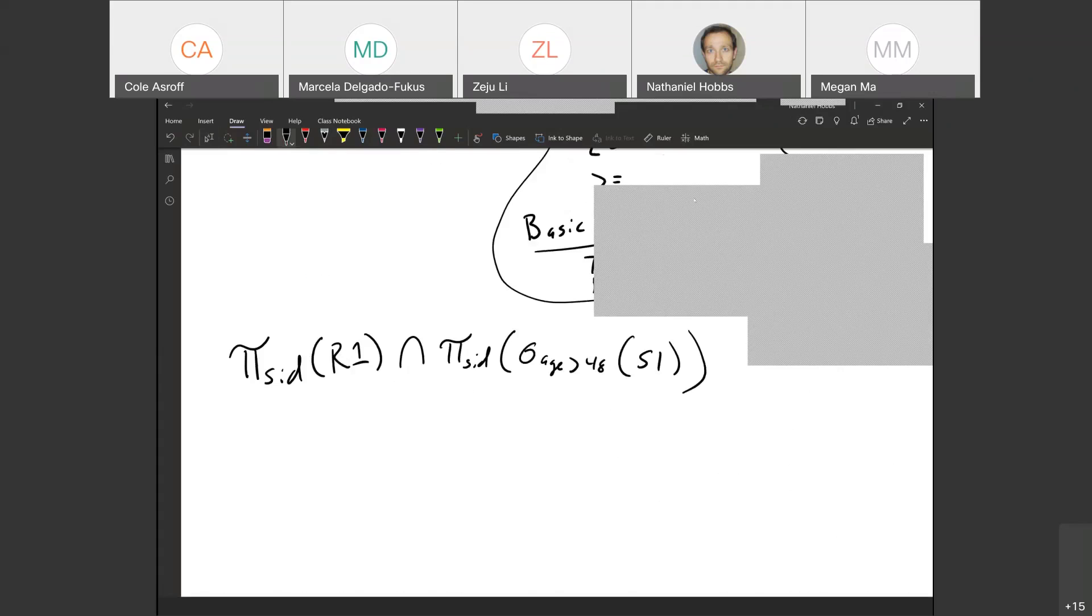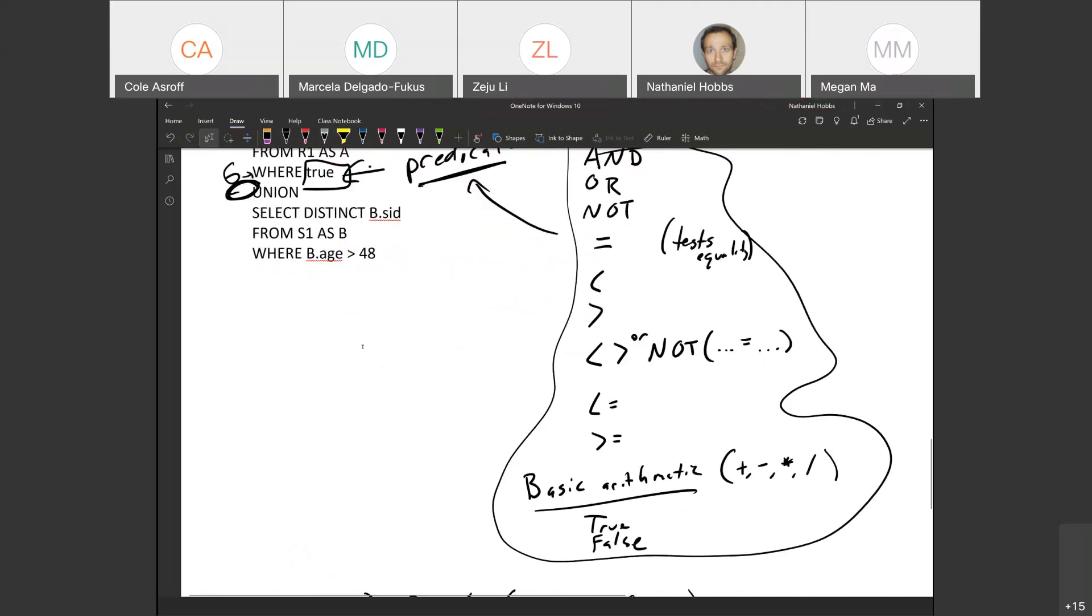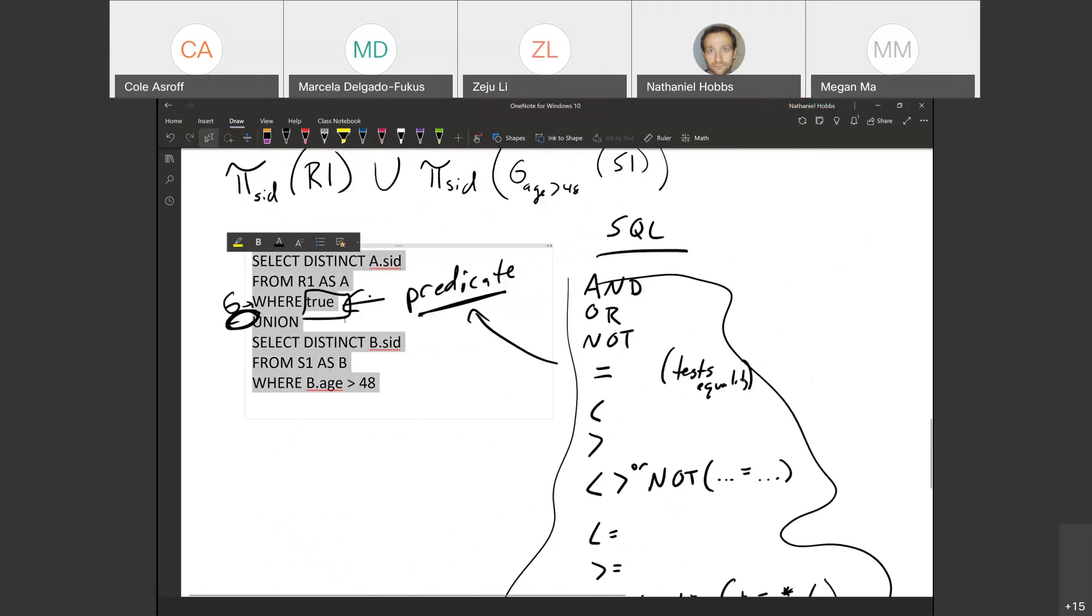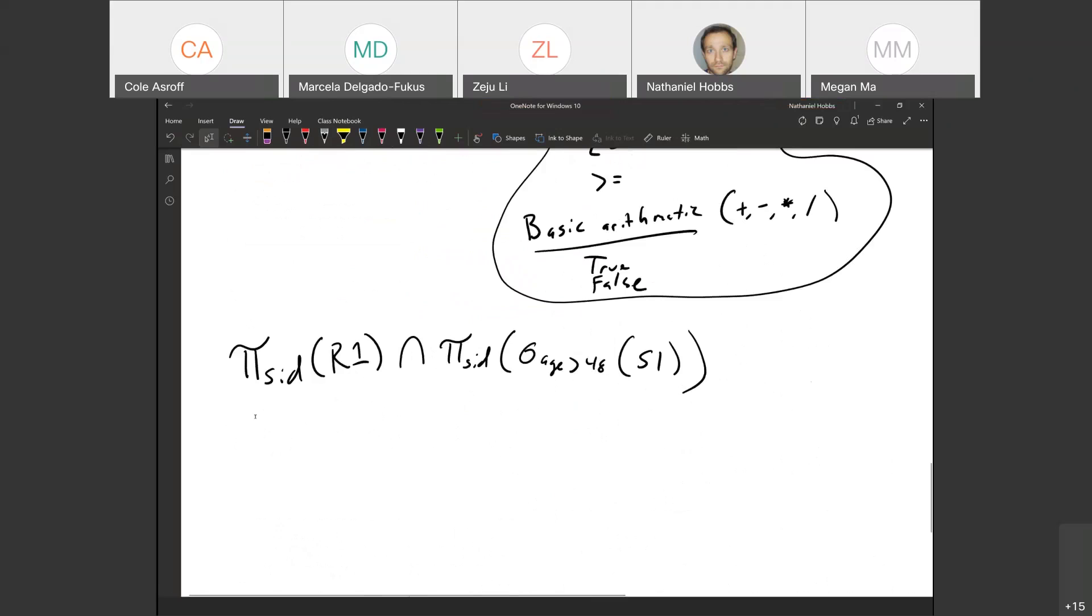I'll save some time and say that this is just like the above one. This part here - select A.SID from R1 as A where true - that is the first part of this query except here instead of union, this is intersect, and then everything else is the same.